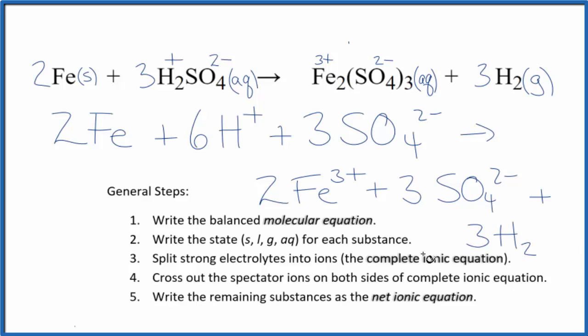Now we'll cross out spectator ions, they're on both sides of the complete ionic equation, they haven't changed so we're not really interested in them. We have Fe here and Fe three plus, those are different, can't do anything with that. We do have in the reactants three sulfate ions right here, three sulfate ions, so we can cross those out. But everything else is unique and that makes the net ionic equation for Fe plus H2SO4.